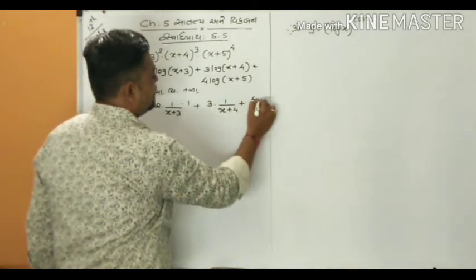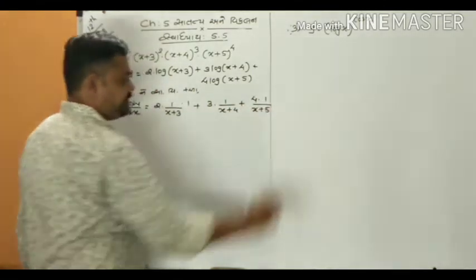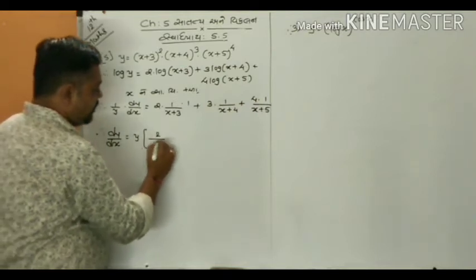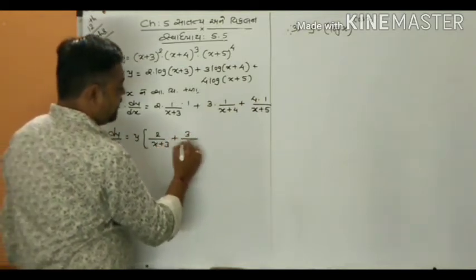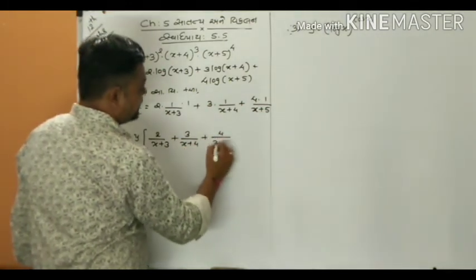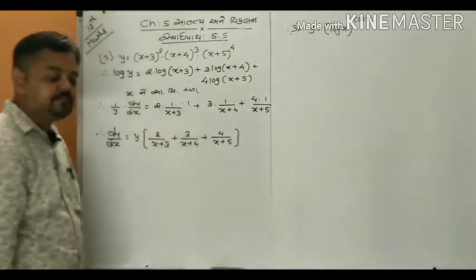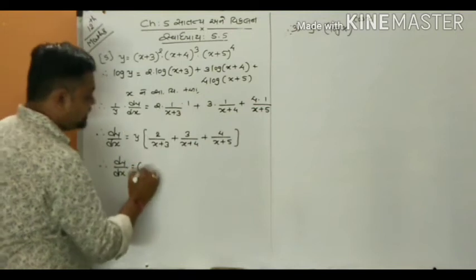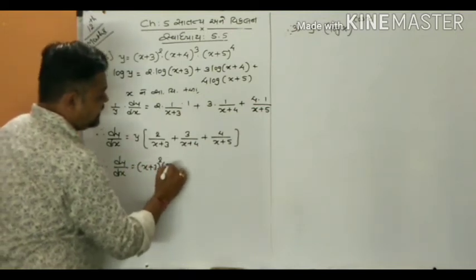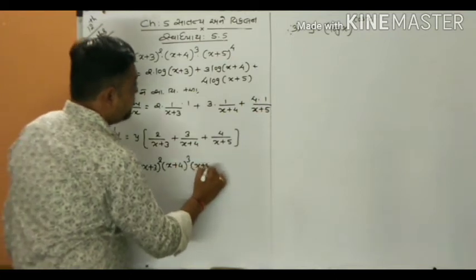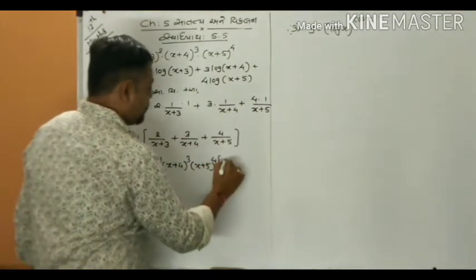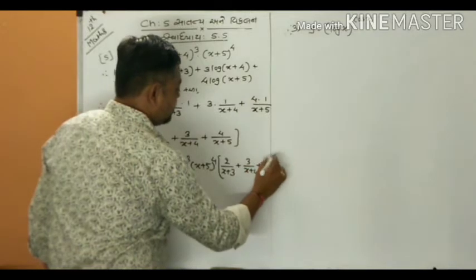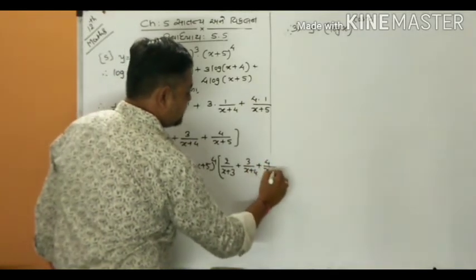Now differentiate with respect to x: (1/y) · dy/dx = 2/(x+3) + 3/(x+4) + 4/(x+5). Solving for dy/dx: dy/dx = y · [2/(x+3) + 3/(x+4) + 4/(x+5)]. Substituting back the value of y: dy/dx = (x+3)²·(x+4)³·(x+5)⁴ · [2/(x+3) + 3/(x+4) + 4/(x+5)].